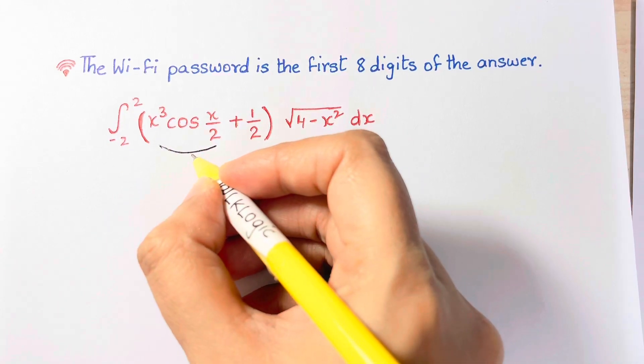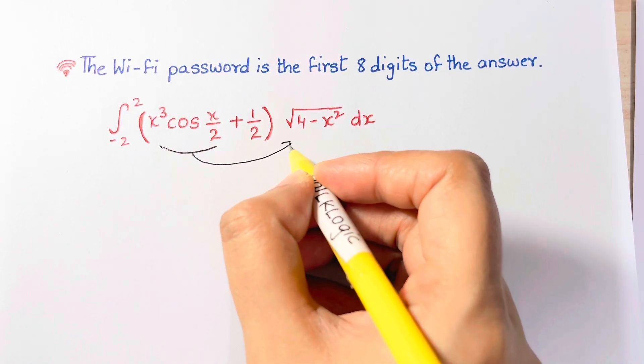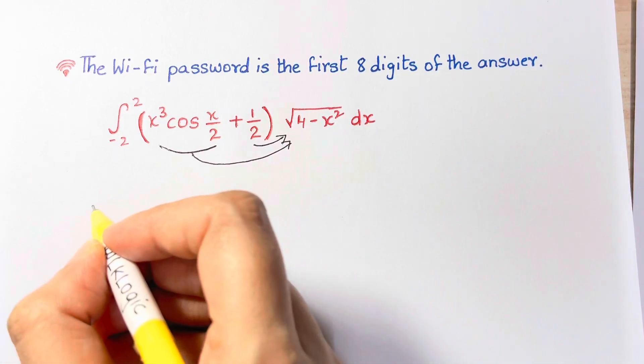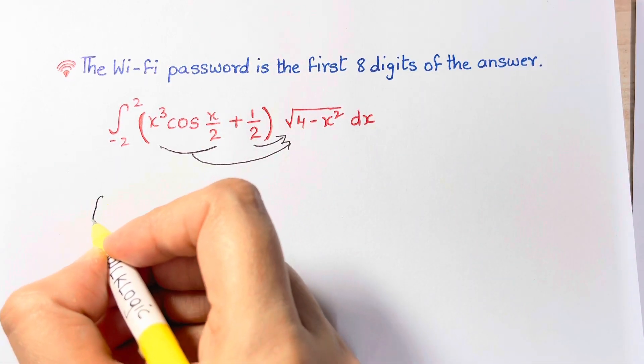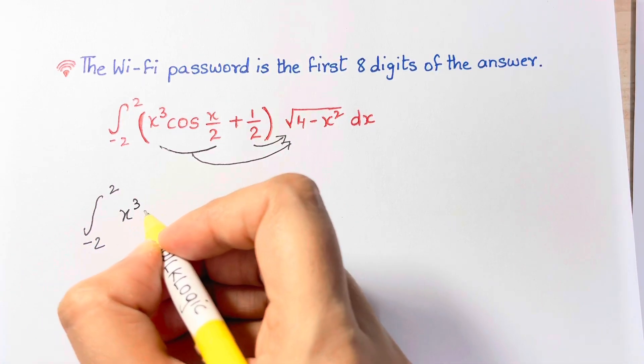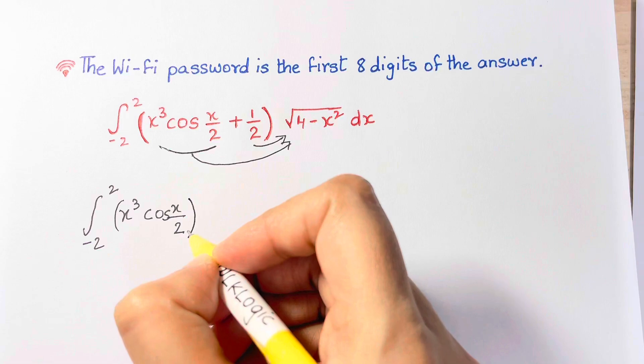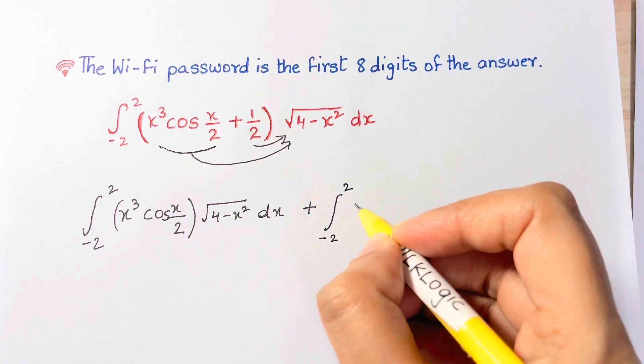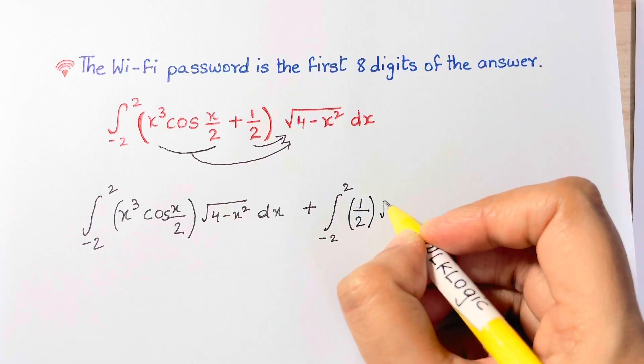So how would we solve this? We'll first distribute what's in the parenthesis by multiplying each term with √(4 - x²). So we have two separate integrals: ∫ from -2 to 2 of x³ cos(x/2) √(4 - x²) plus ∫ from -2 to 2 of 1/2 √(4 - x²).